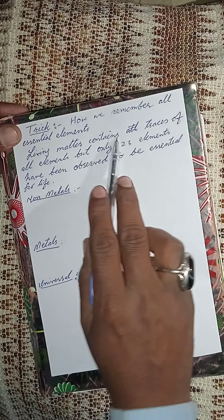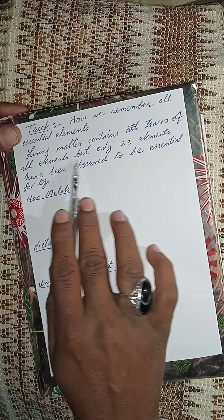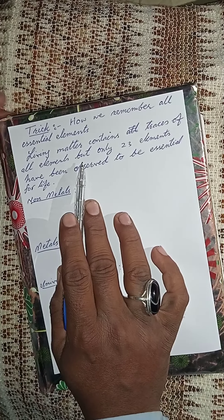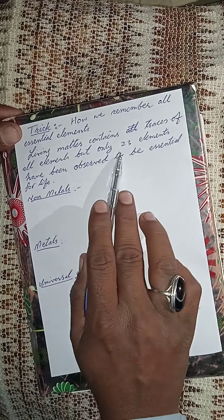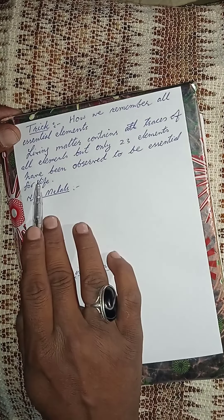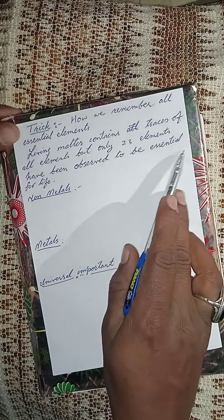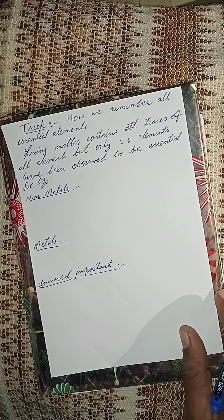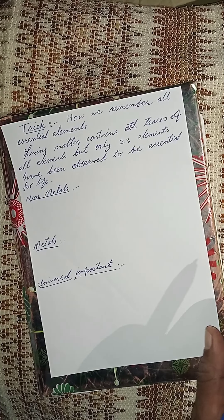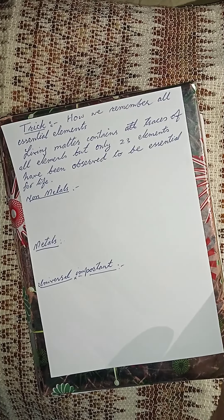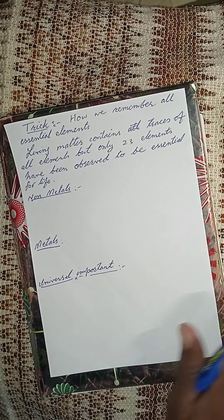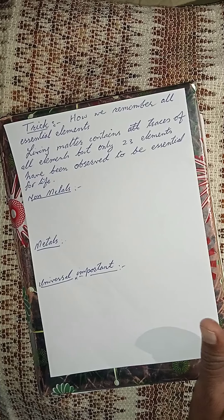Living matter contains traces of all elements, but only 23 elements have been observed to be essential for life. Although living matter contains traces of all elements, the importance is only of these 23 elements.